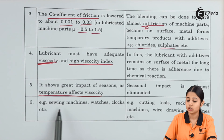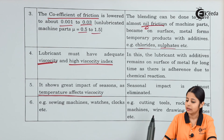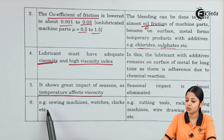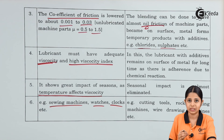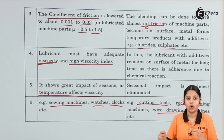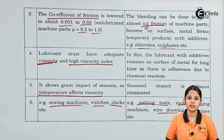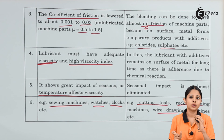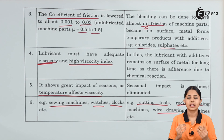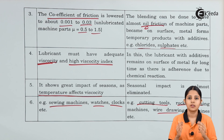Examples of fluid film lubrication include sewing machines, watches, and clocks — all of which have low speed and low load. Examples of extreme pressure lubrication include cutting tools, rock crushing machines, and wire drawing machines — all of which have high load and high speed. In today's session we compared the fluid film mechanism and the extreme pressure mechanism for lubrication, studied the processes, and concluded that both work on different principles and should be chosen depending on the machine and type of use.